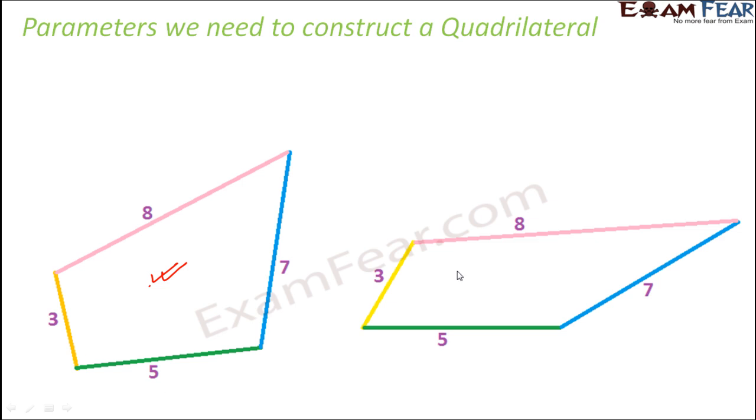This is also a quadrilateral with the same dimensions. But do you think that both quadrilaterals are the same? They are not - they look different. That's because their angles are different, the length of their diagonals are also different. Therefore, we do not say that you need all four sides, all four angles and both diagonals.